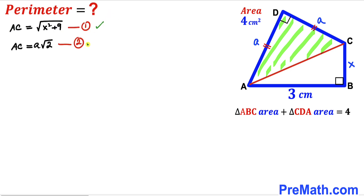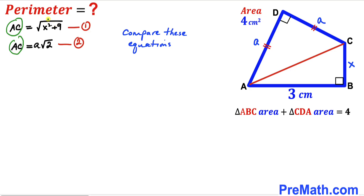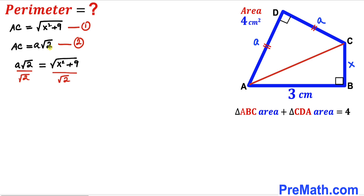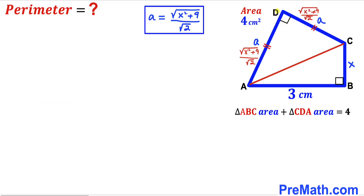We now compare equation one and equation two. Since the left-hand sides are identical, we can equate the right-hand sides: a√2 = √(x² + 9). Dividing both sides by √2 to isolate 'a', we get a = √(x² + 9) / √2. So side lengths AD and CD both equal √(x² + 9) / √2.